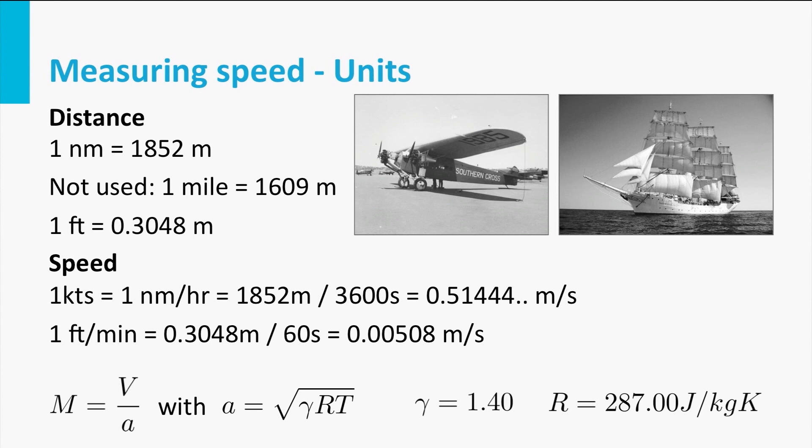Often you hear speed also expressed in Mach, the Mach number, and this is basically the fraction of the speed of sound at which you fly. So Mach 0.5 means you fly half the speed of sound, Mach 2 means you fly twice the speed of sound. The speed of sound varies in the atmosphere with altitude, because the speed of sound is dependent on temperature.